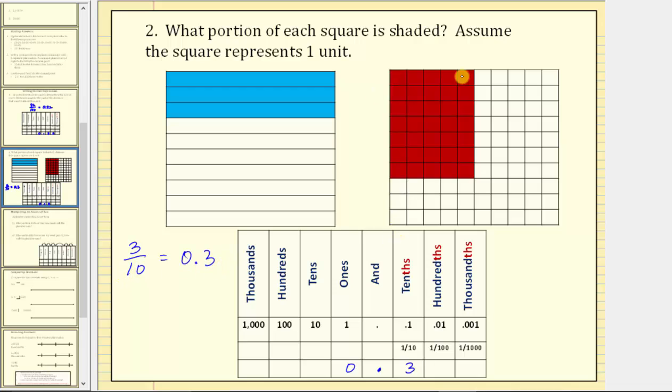Next, notice how the square or unit is cut or partitioned into 100 equally sized parts. Let's determine how many are shaded. Here we have rows of five parts shaded, so 5, 10, 15, 20, 25, 30. 35 parts out of 100 are shaded,